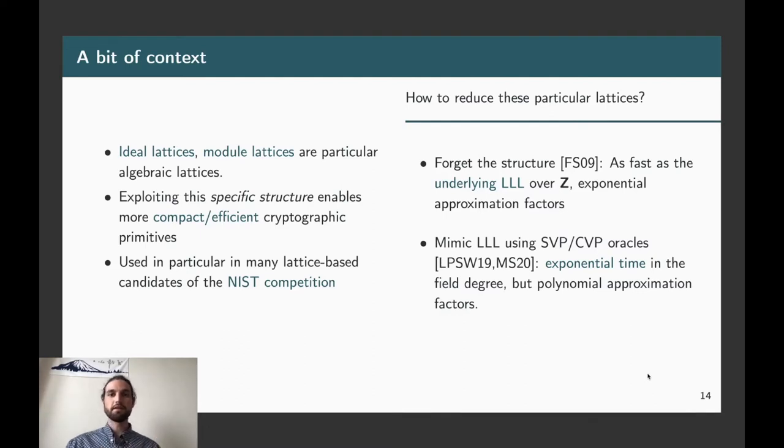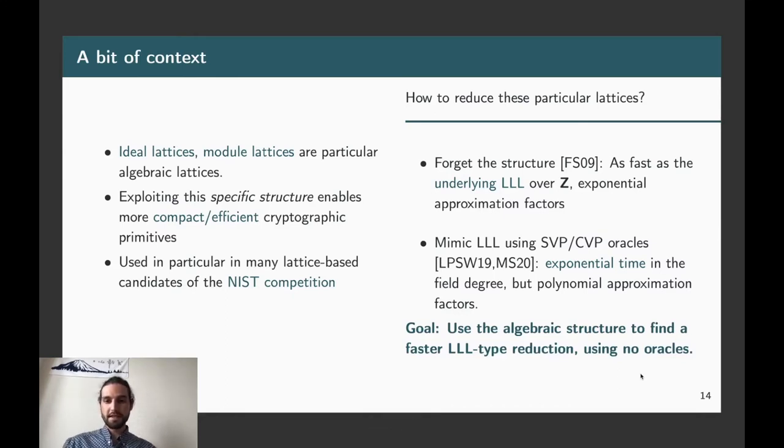On the other hand, what you could do is try to mimic the behavior of LLL and to replace all of these rounding procedures I told you by directly SVP or CVP oracles. So, this line of work has been recently shown that we can find very interesting reductions, in particular by the work of LPSW19 and from MS20, which is presented at another venue of this same conference. And they prove that we can have a reduction, which will be polynomial time, but will call SVP oracles or CVP oracles in some cases, to be able to mimic the LLL algorithm. So, we get something which is exponential time in the field degree because we need these oracles, but it gives polynomial approximation factors in the rank of the lattice. And so, our goal for today will be to try to be polynomial time and use the algebraic structure to design an LLL type reduction, which is not using CVP or SVP oracles.